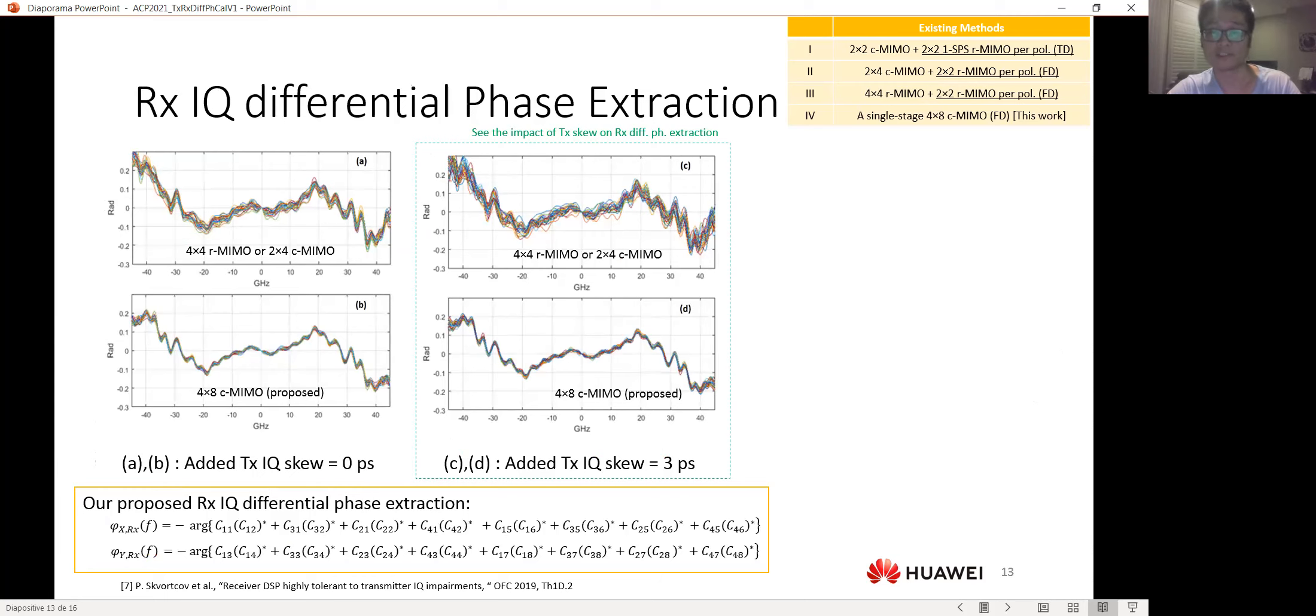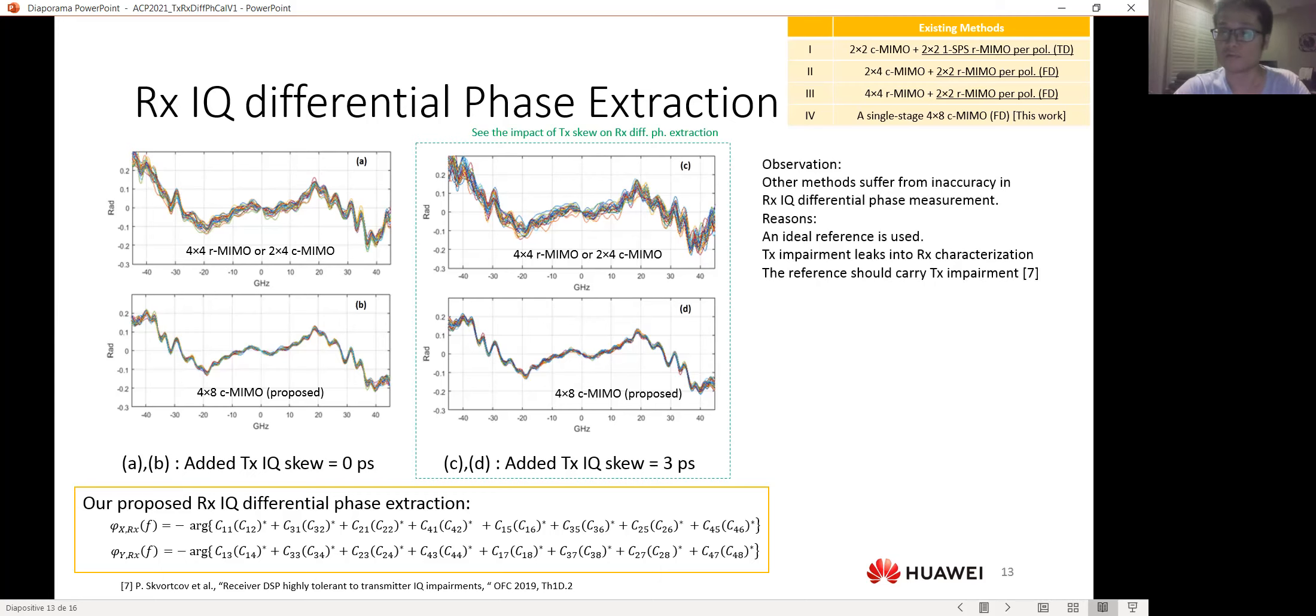And also, when the transmitter skew is present, the fluctuation will become more serious. So the reason for that can be that they are using IU references, and therefore, the transmitter impairments may affect the receiver measurement. And also, if we want to correct it, we may consider to have transmitter impairments on the reference for the MIMO optimization.